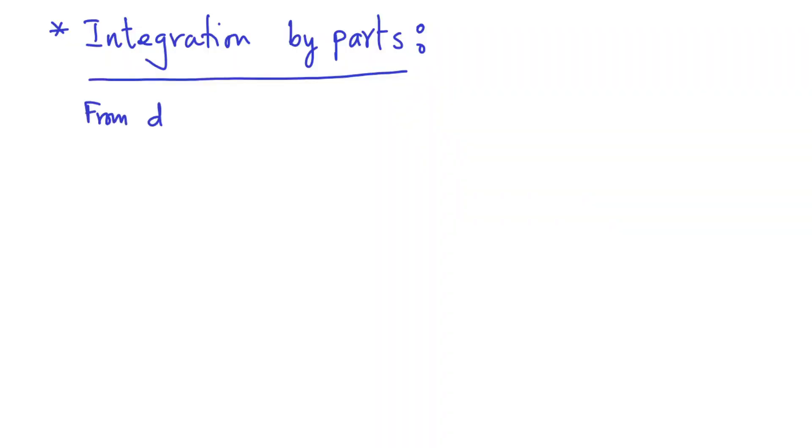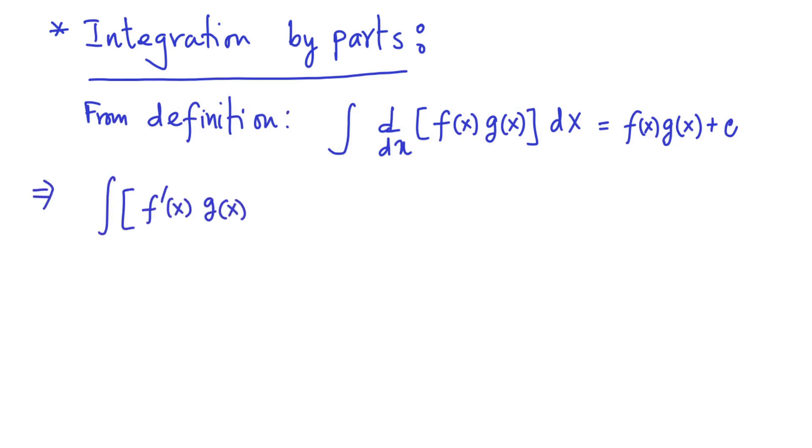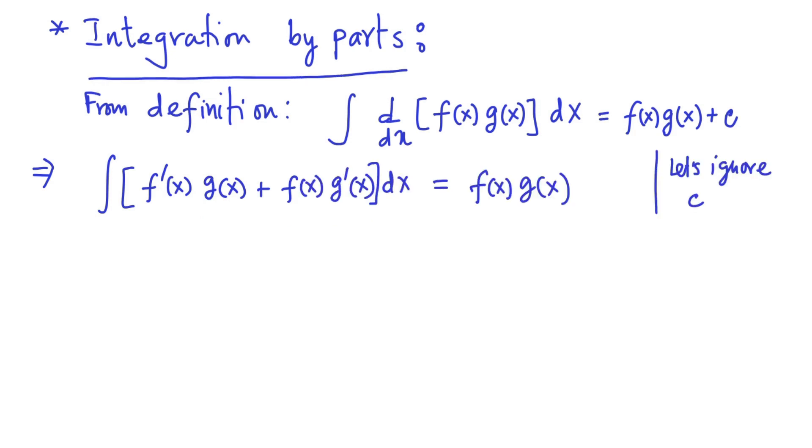We now introduce the notion of integration by parts. From the definition of the antiderivative, we can express the derivative of product of two functions. Now using the Leibniz rule, the derivative of product of f(x) and g(x) can be explicitly evaluated.